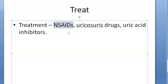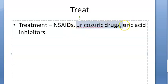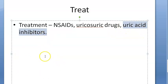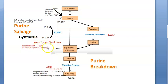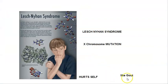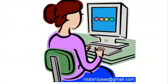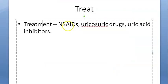For treatment: for pain relief in acute gout you give NSAIDs. There is different treatment for chronic gout — uricosuric drugs like probenecid, and uric acid inhibitors like allopurinol. One important point: patients with Lesch-Nyhan syndrome will have accumulation of PRPP, causing gout-like symptoms due to a problem with purine metabolism.